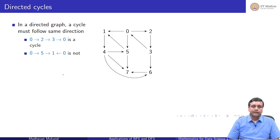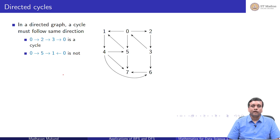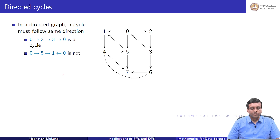Now what happens in a directed graph? In a directed graph, a cycle is also directed — I must go around from a vertex through a set of neighbors and come back, but following the same direction. It is like going around a circle in a one-way street; you have to follow the one-way street and cannot go down it the wrong way.